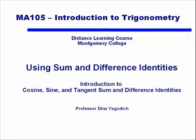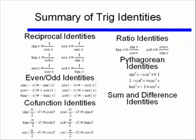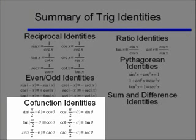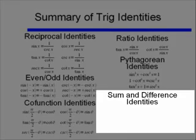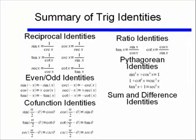This video shows how to use sum and difference identities. We're going to introduce these basic identities. If we go back to our summary of trig identities, you'll notice that I've added two sections: the co-function identities, which we talked about in the first part of this class, and I've also left blank an area for sum and difference identities, which we're going to go over now.